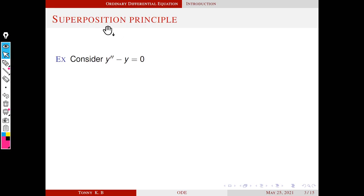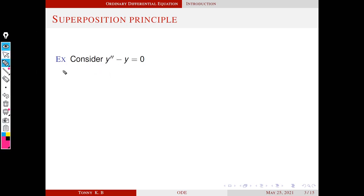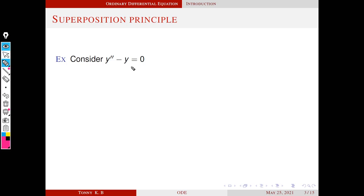Next, we are going to discuss the superposition principle of solutions of a homogeneous differential equation. Before going to the concept, we first consider an example. We consider the differential equation y double dash minus y equals zero. It is clear that this is a homogeneous differential equation because the right-hand side is zero, and it is of the form y double dash plus p(x) y dash plus q(x) y equals zero.